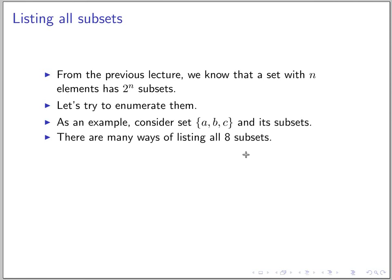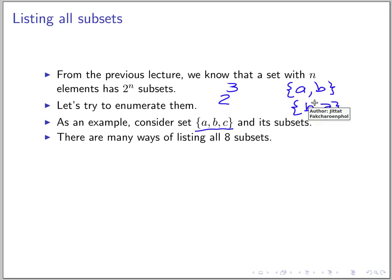As an example, let's consider this set. It has three elements, so it has two to the three subsets. When we write subsets, the subset {a, b} is the same subset as {b, a}, so let's try to order the elements in the subset alphabetically — we would write a, b.